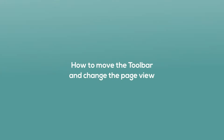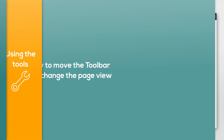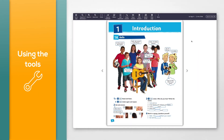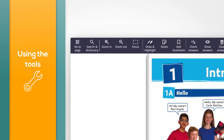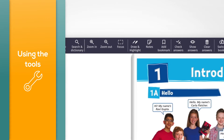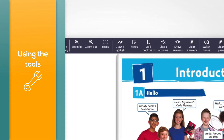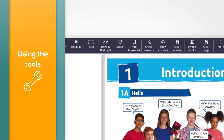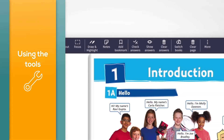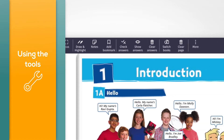How to move the toolbar and change the page view. You will see the toolbar when you open a book. The toolbar is usually at the top of the screen, but you can move it to a different place on the screen if you want to.